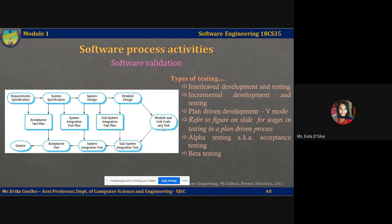Let's take a look at the diagram on the slide, which illustrates the different testing phases in a plan-driven software process. In a plan-driven process, you have a concrete system definition and development plan in place, and you proceed with the different software process activities in accordance with that plan. After completion of each phase, you verify if the software developed is actually in accordance with the plan put in place before development began.